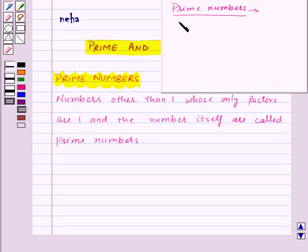For example, numbers like 2, 3, 5, 7, 11, etc. are all prime numbers.